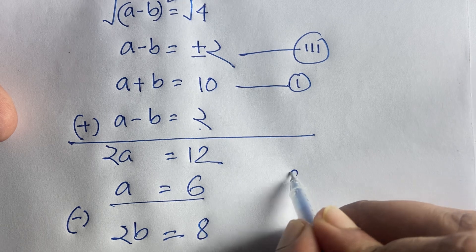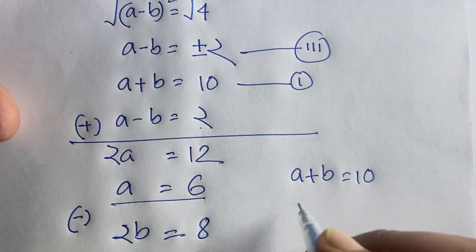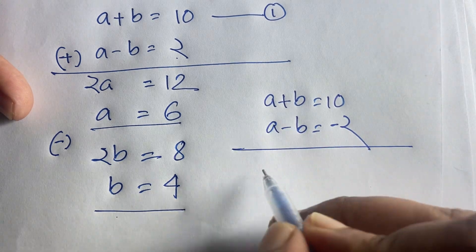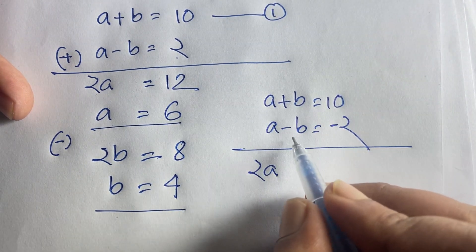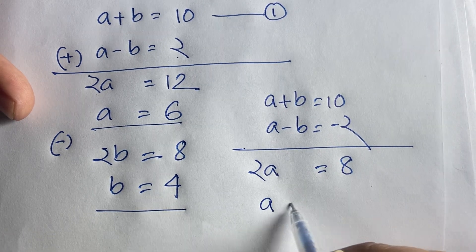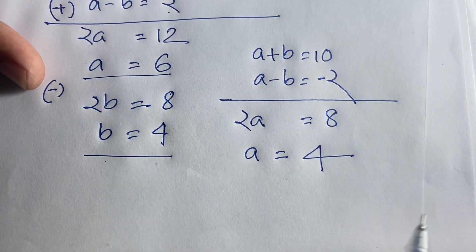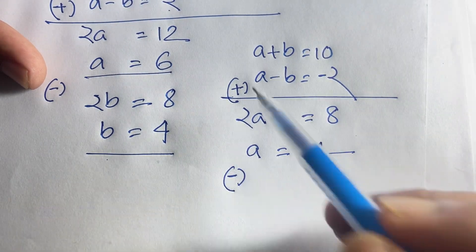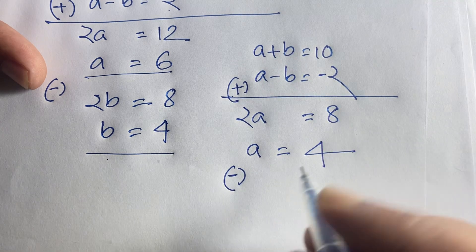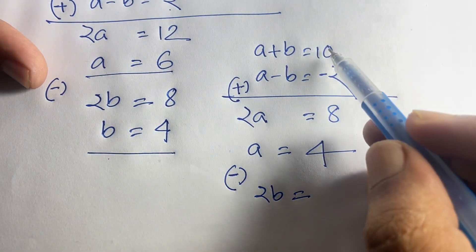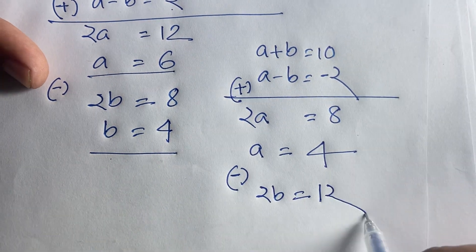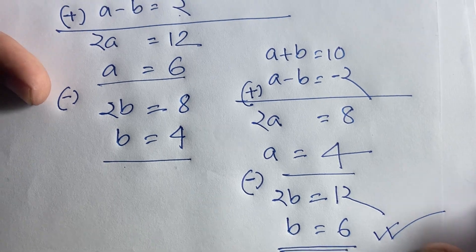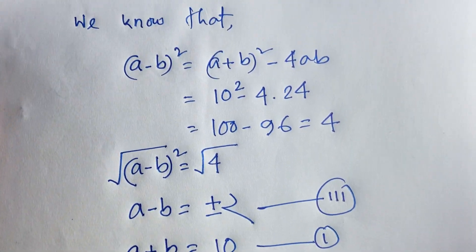For the other case, taking a plus b is equal to 10 and a minus b is equal to minus 2: adding both equations gives 2a is equal to 8, so a is equal to 4. Subtracting both equations gives 2b is equal to 12, so b is equal to 6. This is our other answer: when a is equal to 4, b is equal to 6. Thank you all. If you enjoyed this video, please subscribe to my channel for other interesting videos. Goodbye, take care.